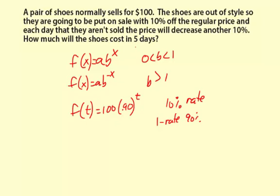So we're going to input 5 days to find how much the shoes will cost in 5 days. So f of 5 equals 100 times 0.90 to the 5, or to the 5th power.